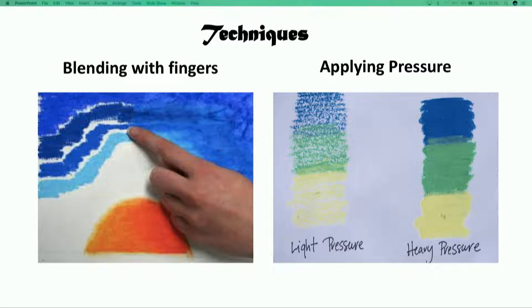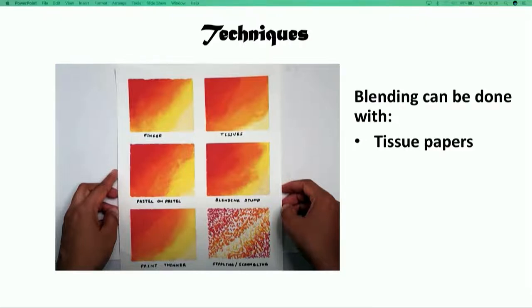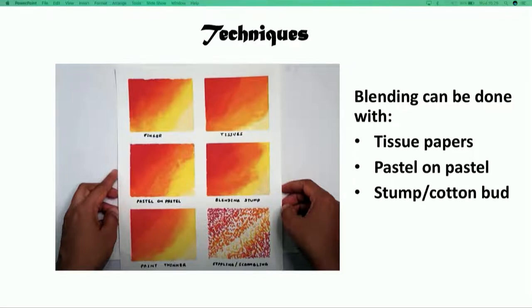This creates a striking, bold and textured effect. With light pressure blending, the action is the same but with less pressure to achieve a delightful medley of shades and tones. Blending can be done with tissue papers, pastel on pastel, stump or cotton bud.